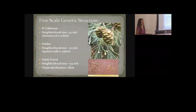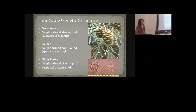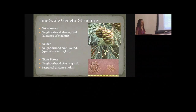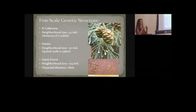I wanted to talk about fine-scale genetic structure — what does genetic variation look like within a population across the landscape? Before that, I want to explain a metric we're using called neighborhood size, which may not be obvious. It accounts for the fact that each individual tree is more likely to mate with trees closer to it, rather than mating being even across a large population. You can think of it as a circle around every individual representing a mating group, with these circles overlapping and interacting across the population.